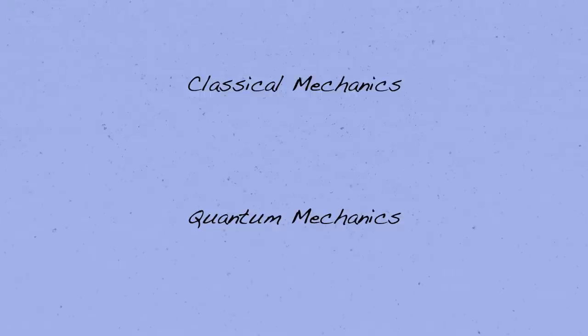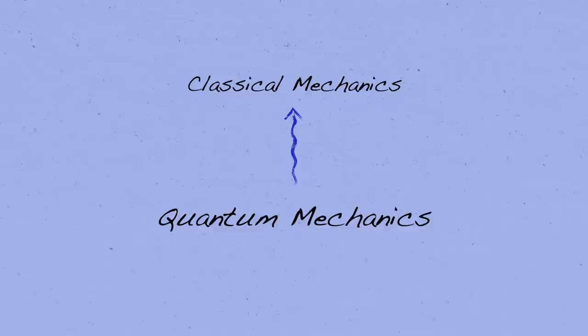Now, the world of quantum mechanics is very different from the classical mechanics that we're all much more accustomed to. And we can't derive quantum mechanics from classical laws like f equals ma. Quite the opposite. It's quantum mechanics that's the more fundamental theory, and classical mechanics emerges from it.